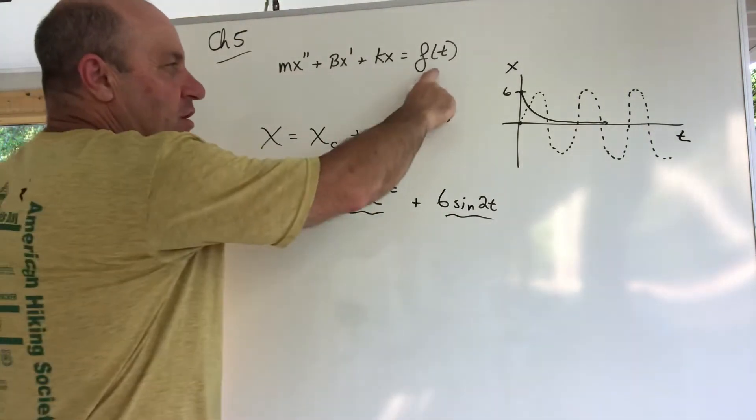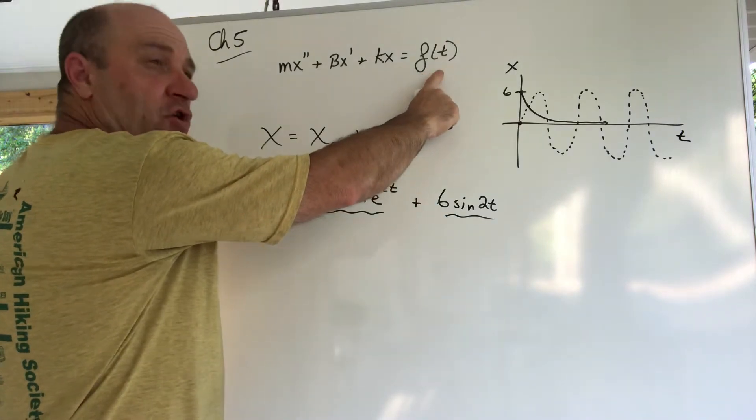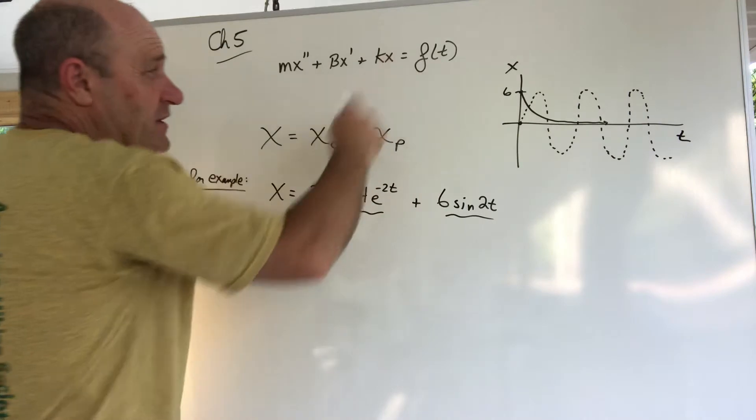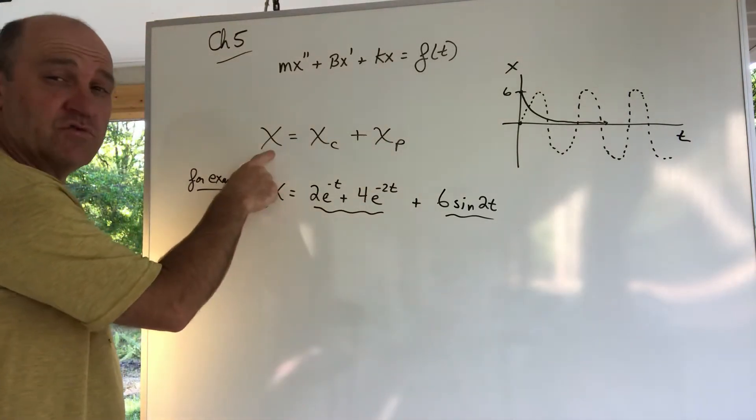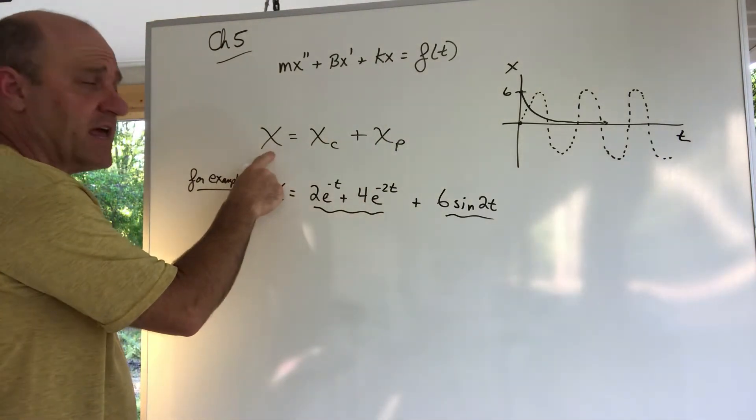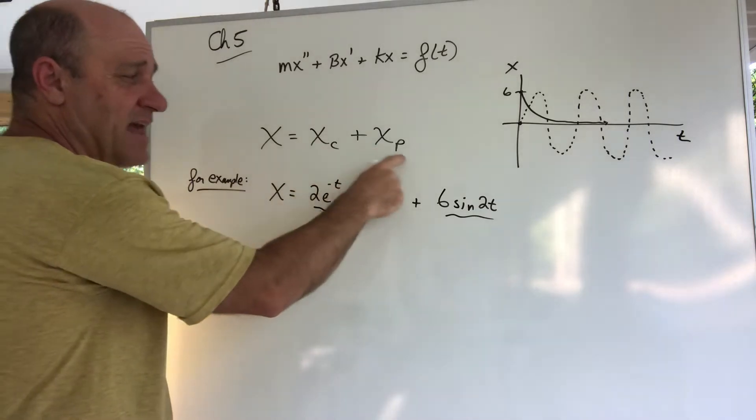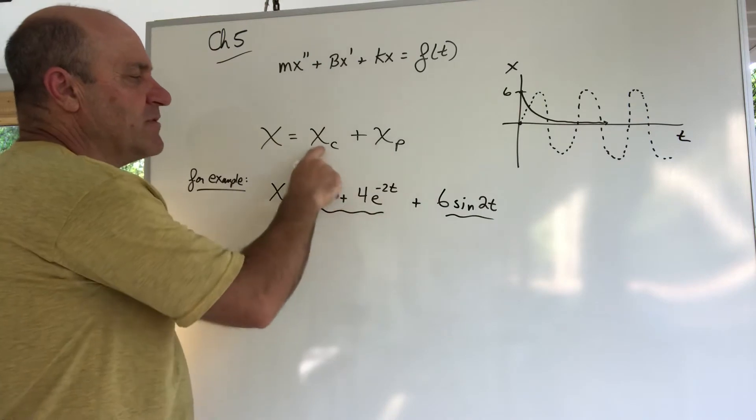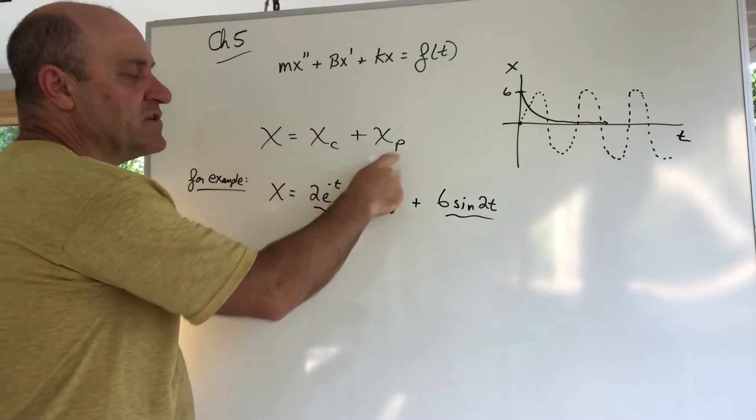You learned in chapter four when it's non-homogeneous, the solution x, the position function x, has an xc and an xp. Back in chapter four we used the letter y, yc and yp, but this is x, so you have an xc and an xp.